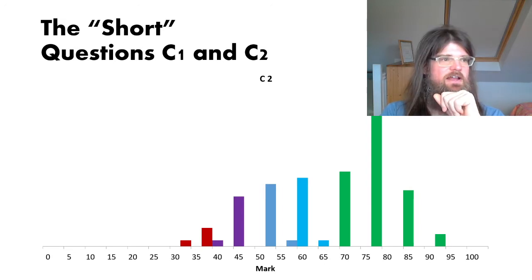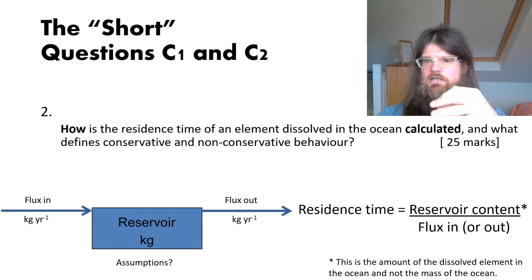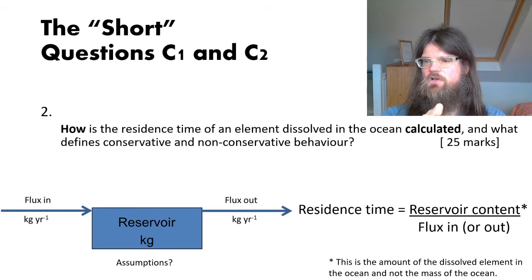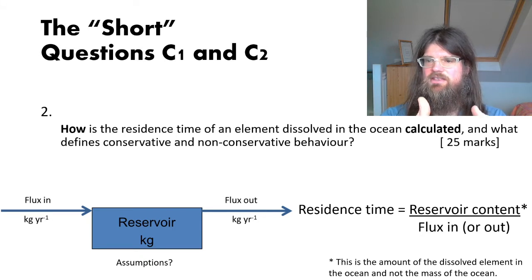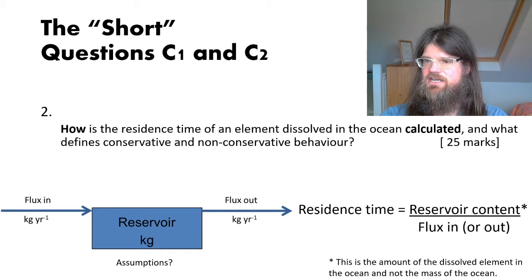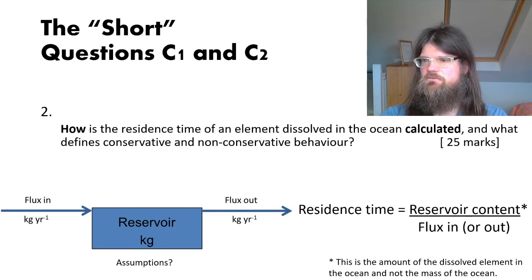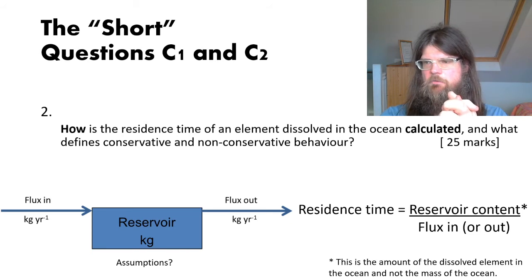Most people got the residence time calculation correct: residence time equals the reservoir content divided by either the flux in or the flux out. For more credit, you should note that we assume flux in equals flux out — we assume a steady state for residence time to have real meaning. It's also important to state that it is the content, not just concentration: it's concentration times the volume of the ocean, divided by the rate. You can work through the units to confirm you end up with a unit of time.